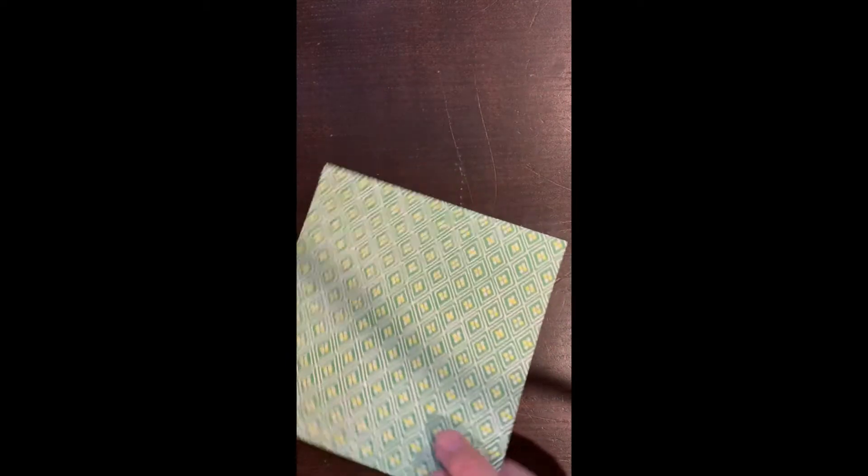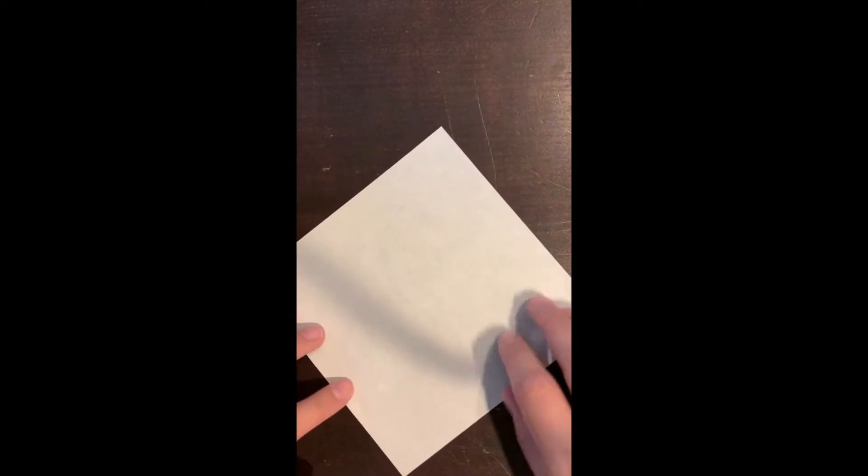We're going to start with our square piece of paper, turn it so that the color side is down, the white side is up, and into a diamond shape.